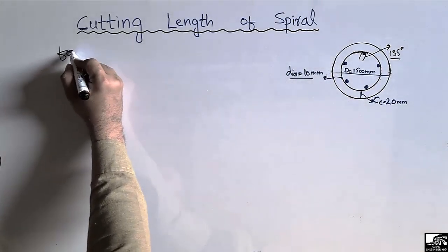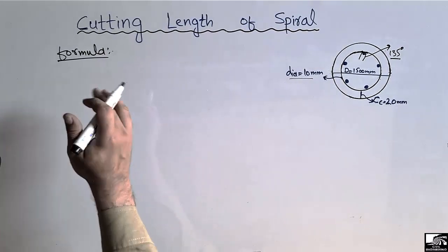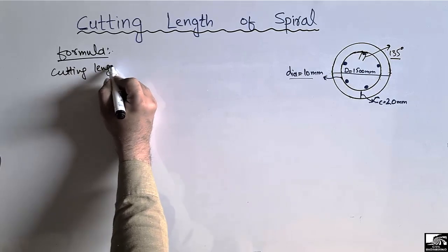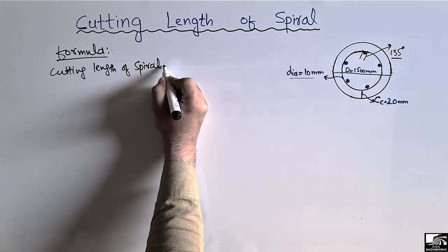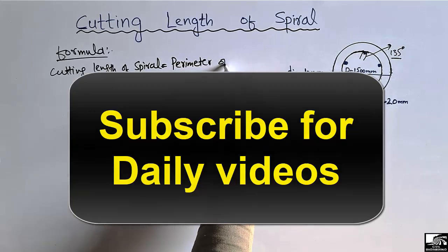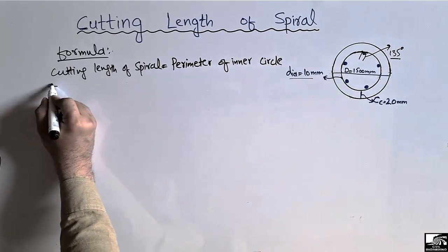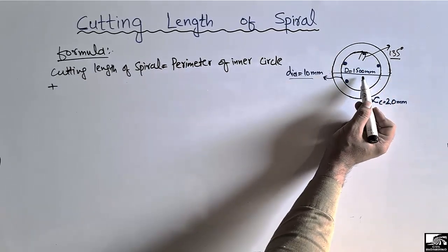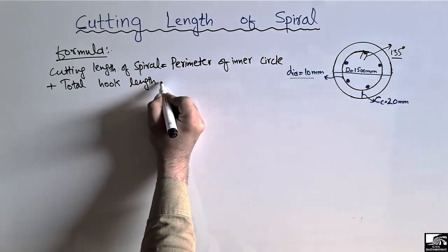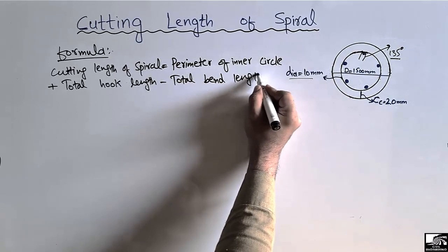We can find the cutting length easily using this formula. The cutting length of the spiral for the column or pier equals the perimeter of the inner circle, plus the total hook length, minus the total bend length. I will explain each component one by one in detail and also solve this numerical problem.